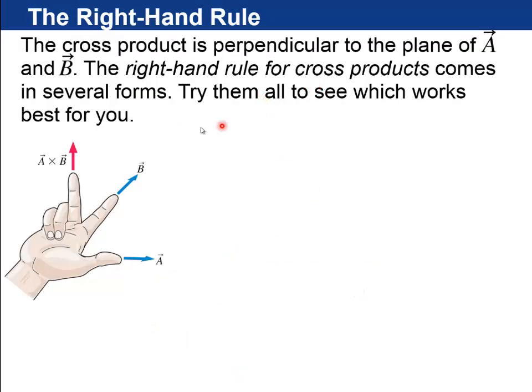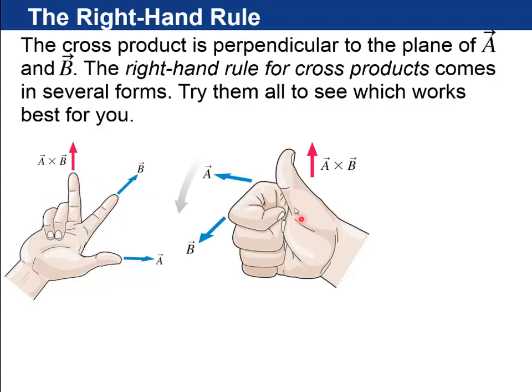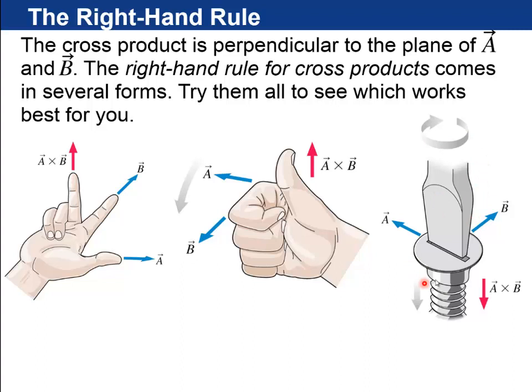So this right-hand rule for cross products comes in many forms. You can try them all to see which works best for you. Here's one where you point with your index finger along B, your thumb along A, A cross B is where your middle finger sticks up. This is one I kind of like to use because it's similar to the right-hand rule for rotation, which is that you put your thumb up and your fingers straight out along the vector A, and then you curl your fingers towards vector B, then your thumb is pointing in the direction of A cross B.